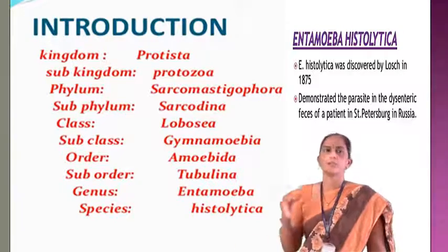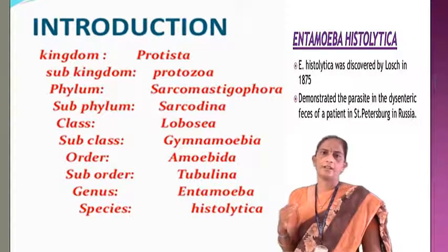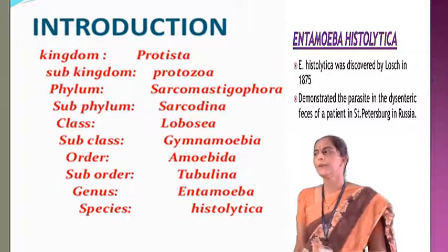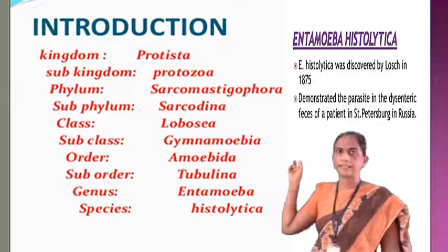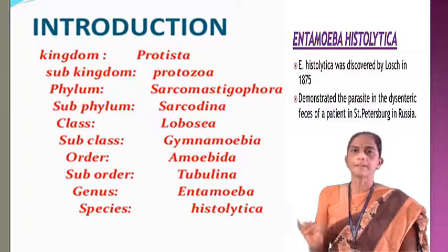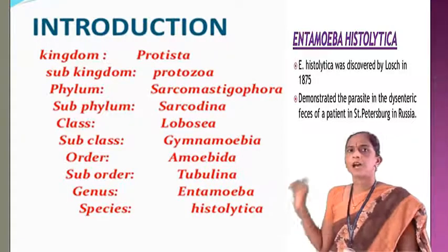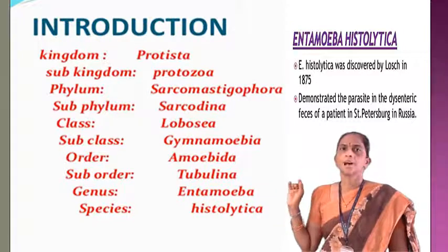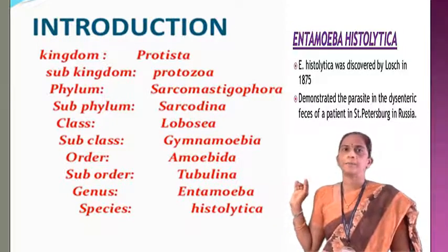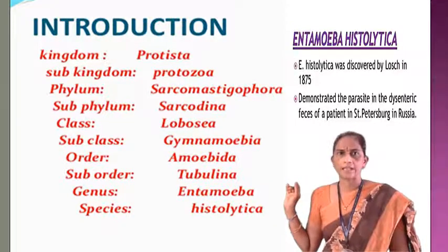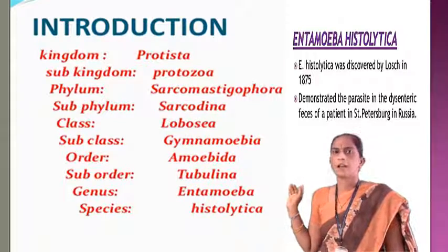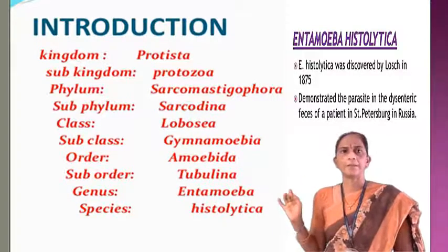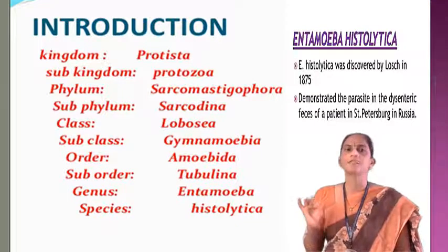Next, the introduction of Entamoeba histolytica. Entamoeba histolytica belongs to the kingdom Protista, sub-kingdom Protozoa, phylum Sarcomastigophora, subphylum Sarcomastigophora, class Lobosea, order Amoebida, genus Entamoeba, and the species is histolytica.